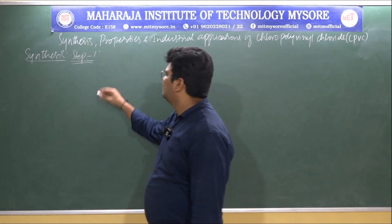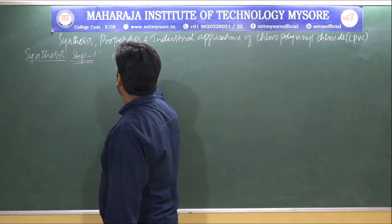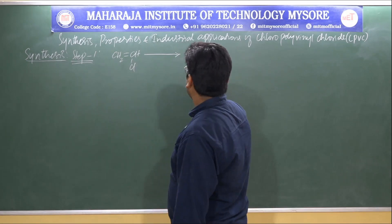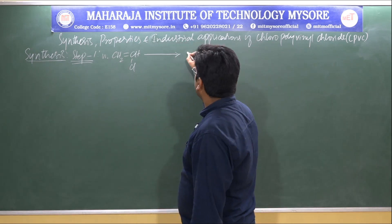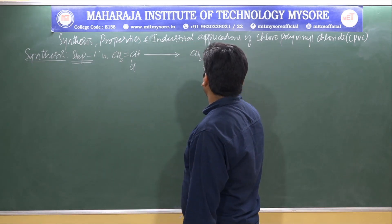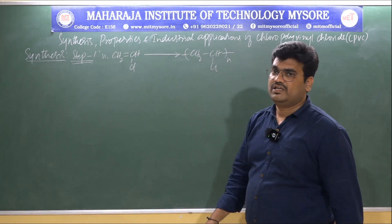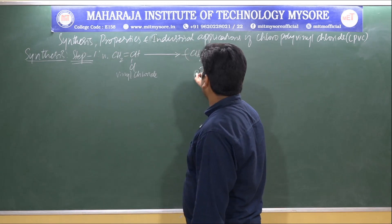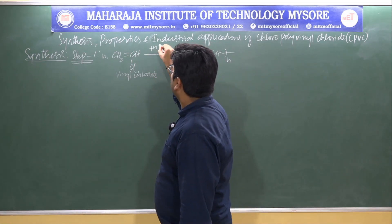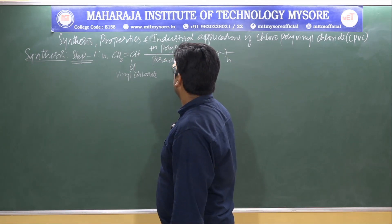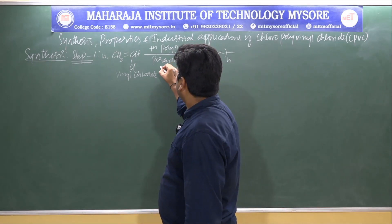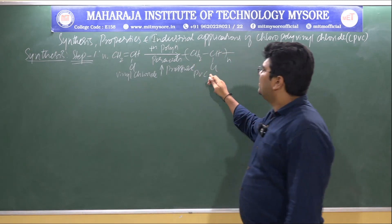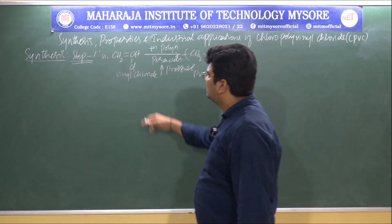The monomer for polyvinyl chloride is vinyl chloride, which is CH2=CHCl. When this undergoes addition polymerization via a free radical mechanism, taking n moles, it forms the polymer —CH2–CHCl—n. This is vinyl chloride undergoing addition polymerization in the presence of a peroxide initiator and under high pressure to give polyvinyl chloride.